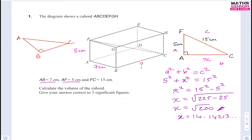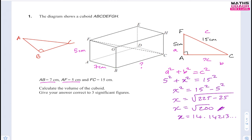The more we round now, the more our answer may drift. So 14.14213 is the length A to C. Now we go to the floor triangle and write down AC as 14.14213, or more accurately the square root of 200. Let's apply Pythagoras' theorem to this triangle. A to B is 7 centimetres. Labelling our triangle with C as hypotenuse, this time we're finding BC.